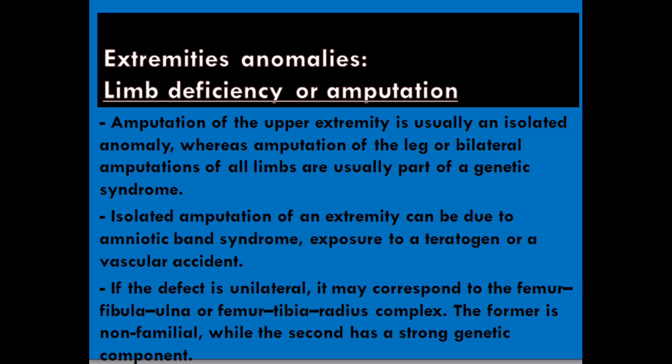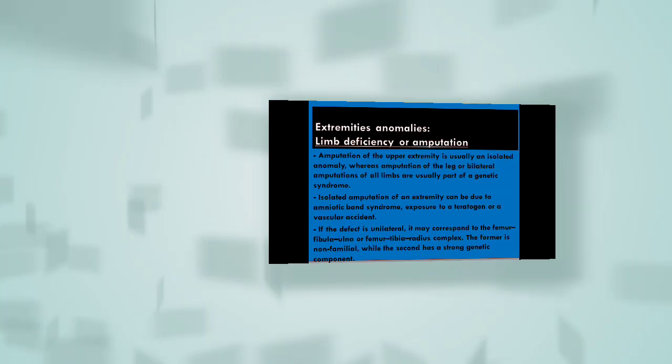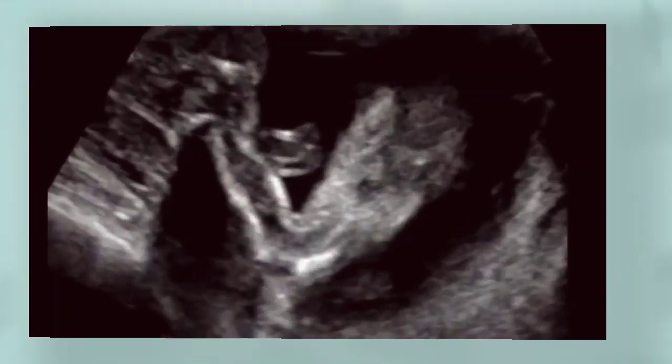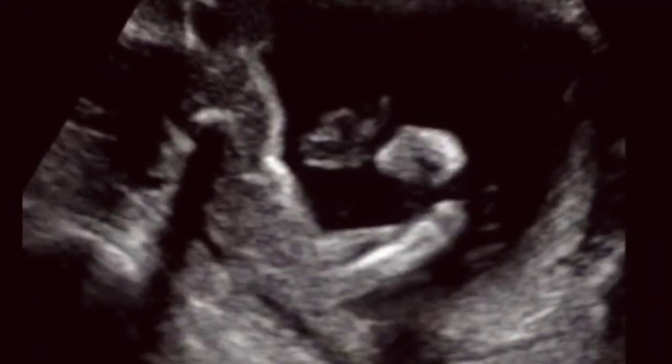If the defect is unilateral, it may correspond to the femur-fibula-ulna or femur-tibia-radius complex. The former is non-familial, while the second has a strong genetic component.